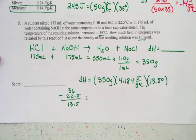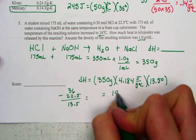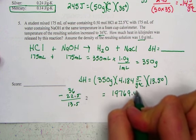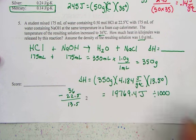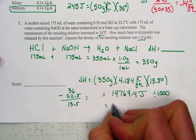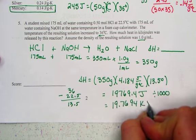So we'll hit 350 times 4.184 times 13.5, and it now is reading 19,769.4 joules. I'll divide that answer by 1,000 to get my reported value in a kilojoule, 19.7694 kJs of energy.